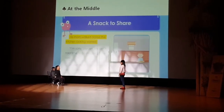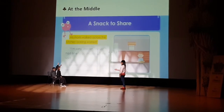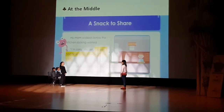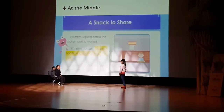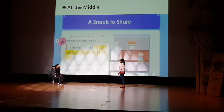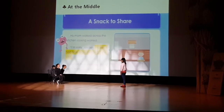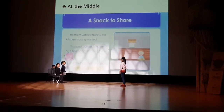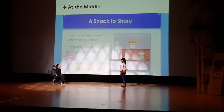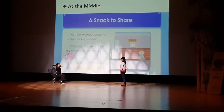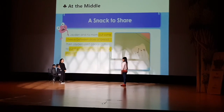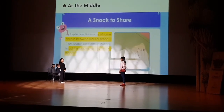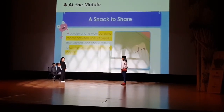At the middle, why does the mom look worried? She has not had time to go shopping. That's a problem. At the middle, what does Jayden say about this problem? He says he has an idea. Good job! At the middle, what does Jayden do? Jayden and his mom make sandwiches, and Jayden cuts them into fancy shapes.